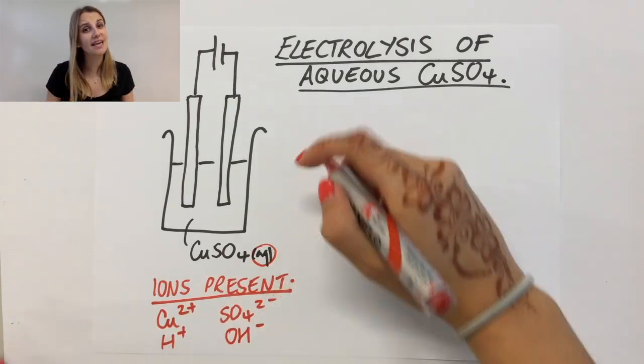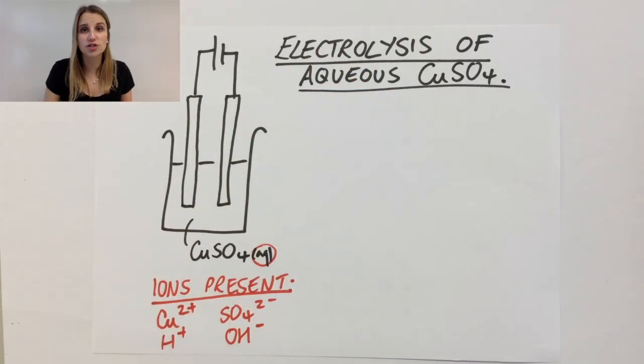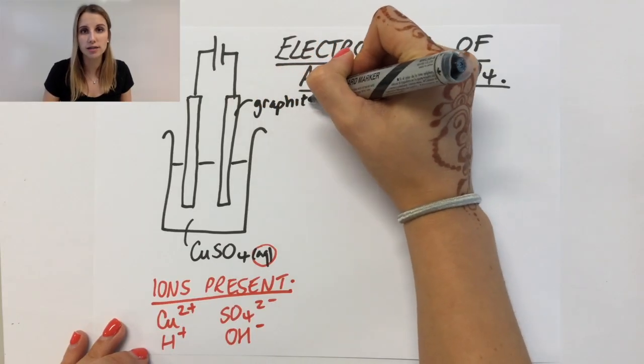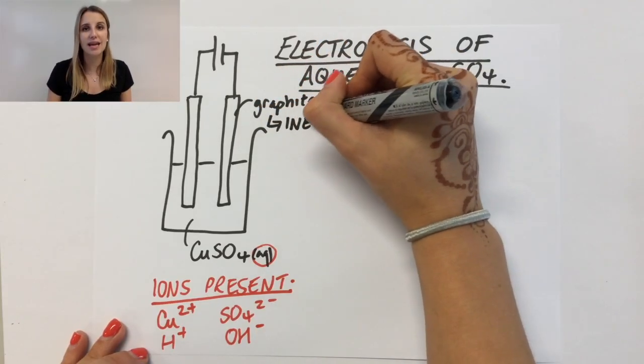In this particular case, I'm using graphite electrodes, which means they're completely inert and they're not going to take part in the electrolysis. They're completely unreactive.